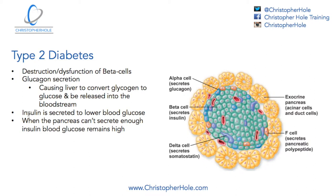The insulin is being secreted and trying to be released into the bloodstream to remove that glucose. But the problem comes when the pancreas can't secrete enough insulin to maintain or reduce the high levels of blood glucose. So it's very much these two cells being out of balance.